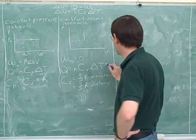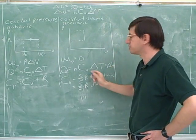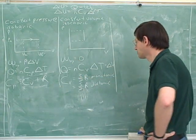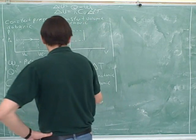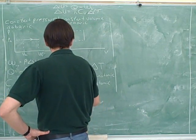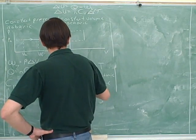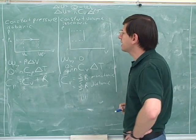Alright, so we could also have made a note to ourselves that this equation also gives us delta U for this special case. Because in this case the work is zero. So in this special case Q equals delta U, both given by the same formula.